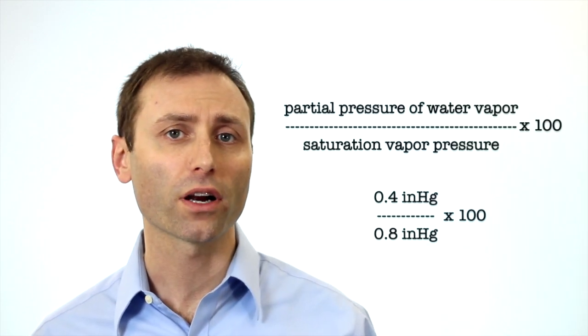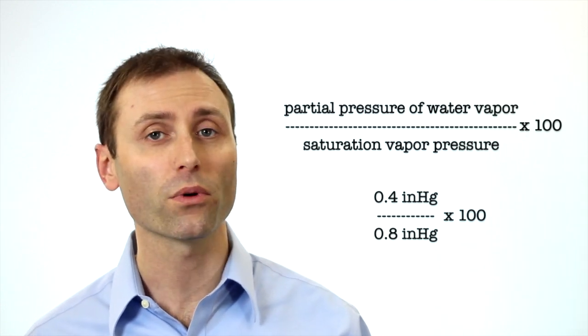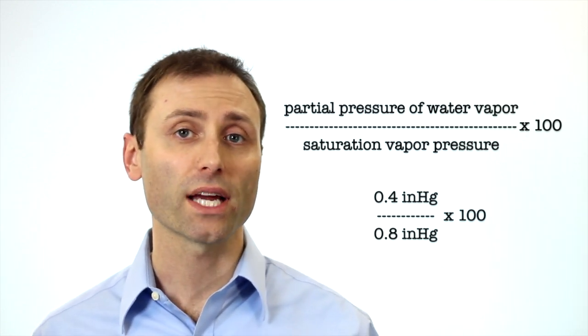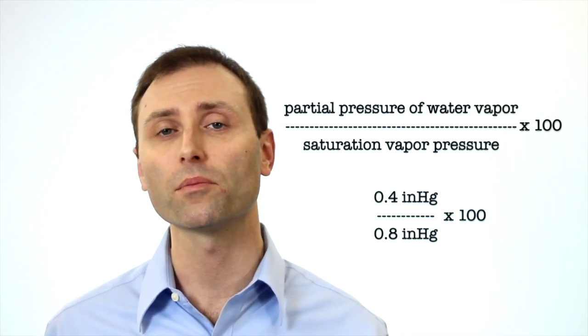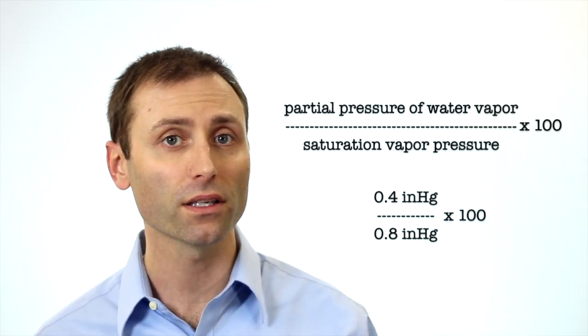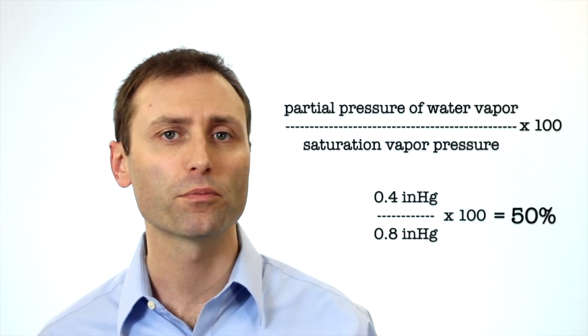So let's bring it all together. We divide the partial pressure of water vapor, which is 0.4 in this room, divided by the saturation vapor pressure, 0.8 in this room, and multiply this number by 100. If you do the math correctly, you should come up with 50%.